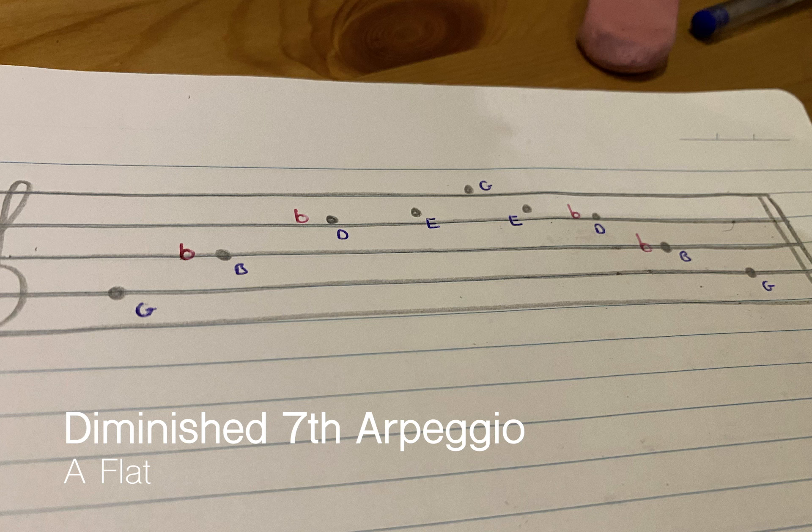So the fingering for this arpeggio will be first finger on G, second finger on B flat, third finger on D flat, fourth finger on E, and then your first finger will return to G. And then same way going down: fourth finger on E, third finger on D flat, second finger on B flat, and first finger on G. And that is your diminished seventh arpeggio of A flat, only in the root position.